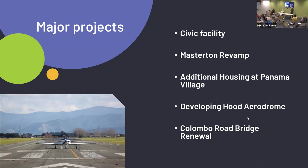We've got additional housing — Panama Village — that we're looking at converting and getting into social housing. Developing the Hood Aerodrome is around widening the runway and installing runway safety zones at both ends so that planes can land properly. And the Columbo Road Bridge — currently it's a one-way bridge, been affected by underscour at Waatoa. That bridge is going to be renewed and we're starting work this summer.